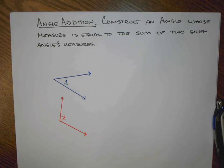Welcome back to Mr. Irland's Geometry. In this lesson, we're going to talk about constructing an angle whose measure is equal to the sum of two given angle measures.